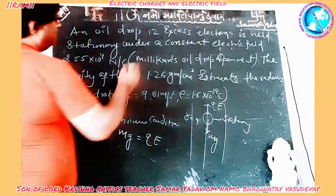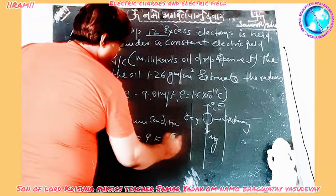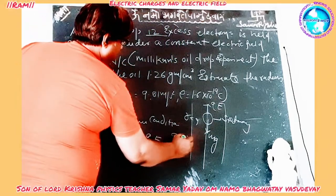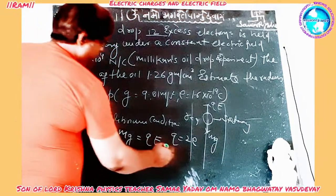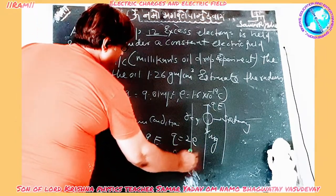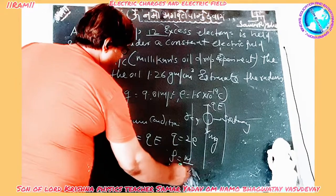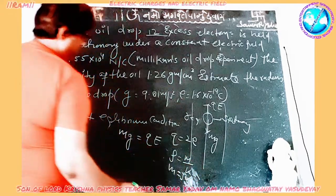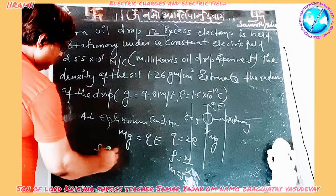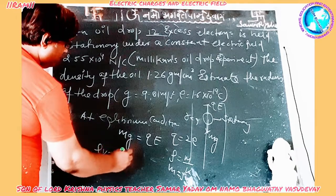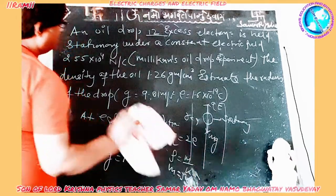Given that the drop has 12 excess electrons, the total charge Q is equal to 12e. We also know that density rho is equal to mass upon volume, therefore mass is equal to rho into V. So substituting: rho into V into g is equal to 12e into capital E. Now simplifying further.